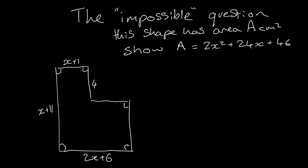So the question gives you an area with some of the lengths on some of the sides. It says here's the shape of all the measurements in centimeters and it says this shape has an area of A centimeter squared and then show that A equals 2x squared plus 24x plus 46.